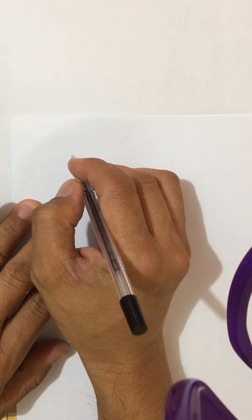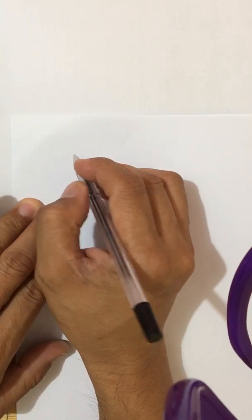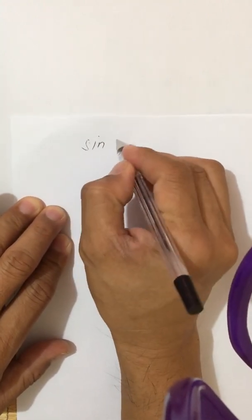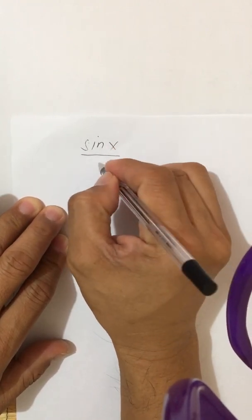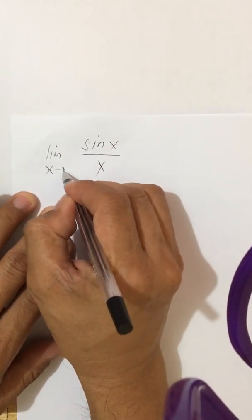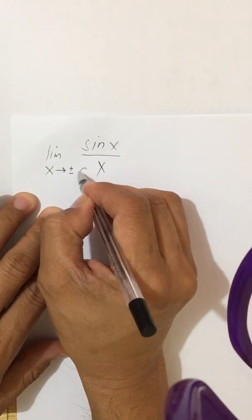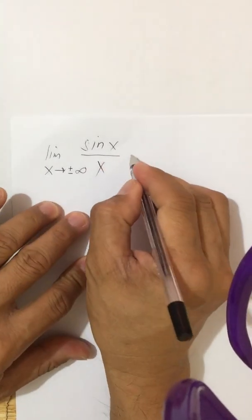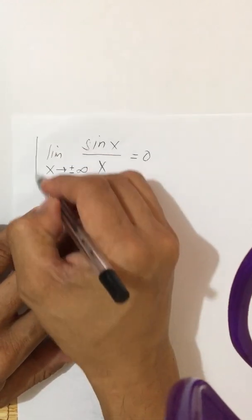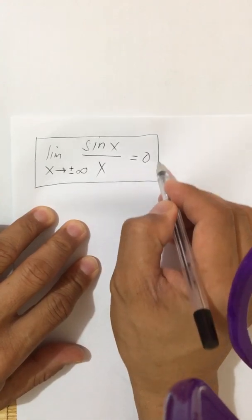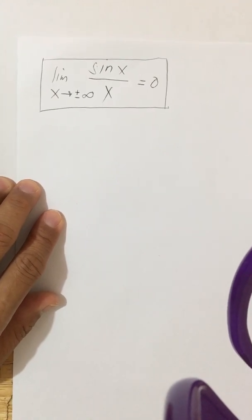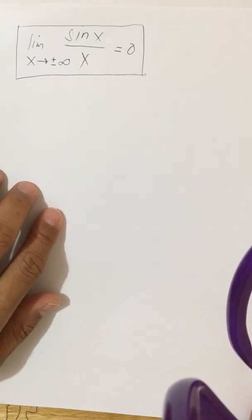For example, if you are given sine x divided by x and you take the limit of this function as x approaches positive or negative infinity, this will give us zero. This is an established principle that we need to keep in mind and remember always.